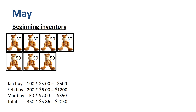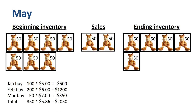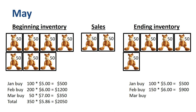Onward to May. The ending inventory of April is the beginning inventory of May. Two boxes of toy giraffes are sold in May. The ending inventory is 5 boxes of 50 units each, 250 units in total. We once again apply LIFO — last in, first out — and assume that the newest inventory gets sold first. What remains in inventory at the end of May is the full 100 units from the January buy, 150 units from the February buy, and no units from the March buy — in total 250 units with a total purchase price of $1,400, so on average $5.60 per unit.